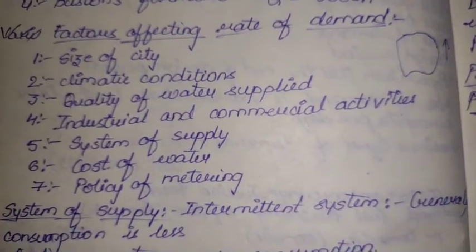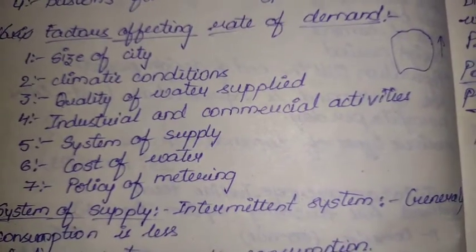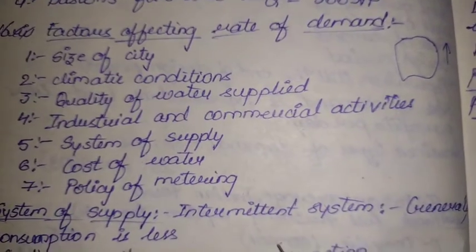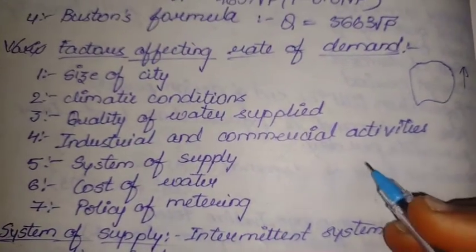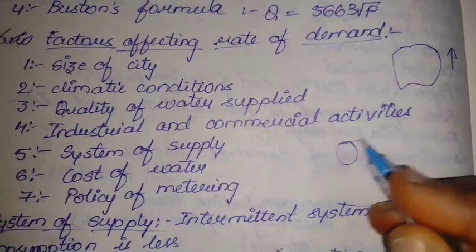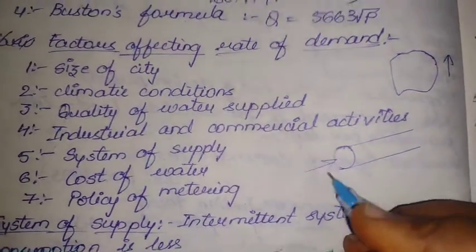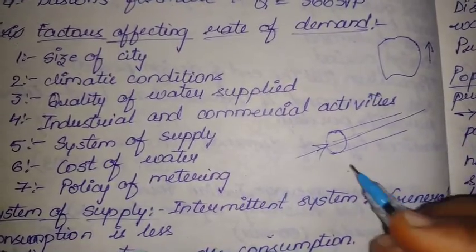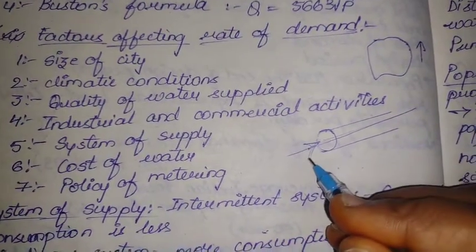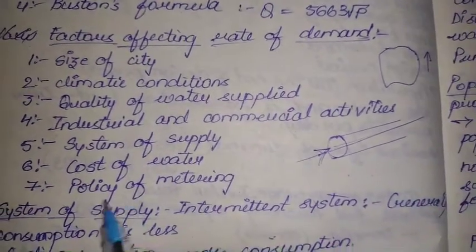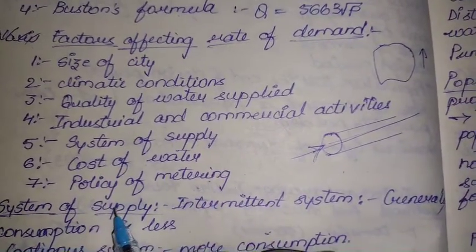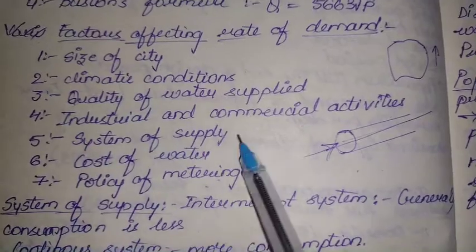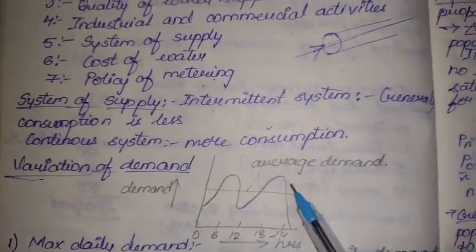Cost of water also affects demand — if the cost is more, people consume less. The policy of metering also influences demand: a meter measures the inlet of water through the pipe and charges are applied based on consumption, so depending upon the metering policy, the rate of demand varies.